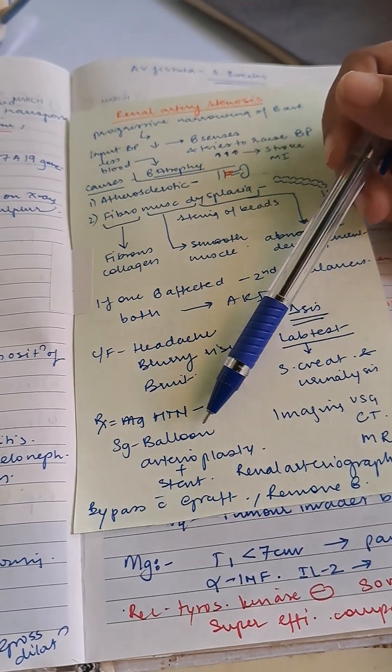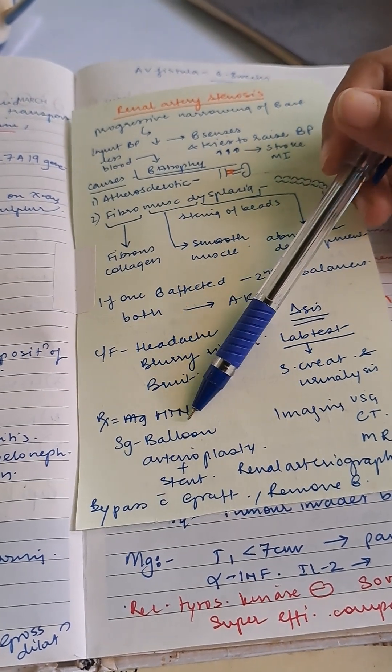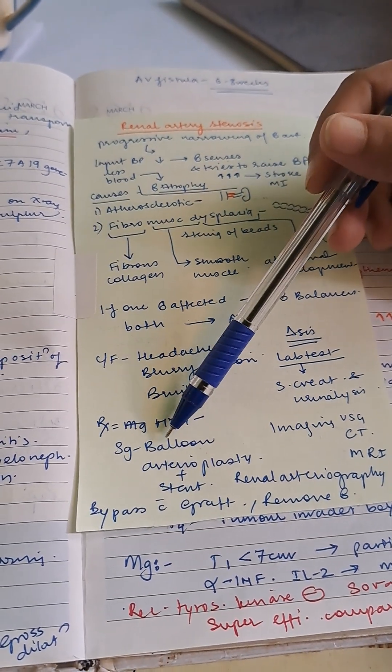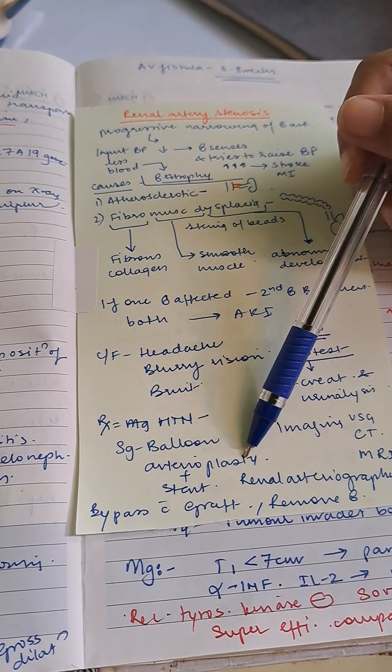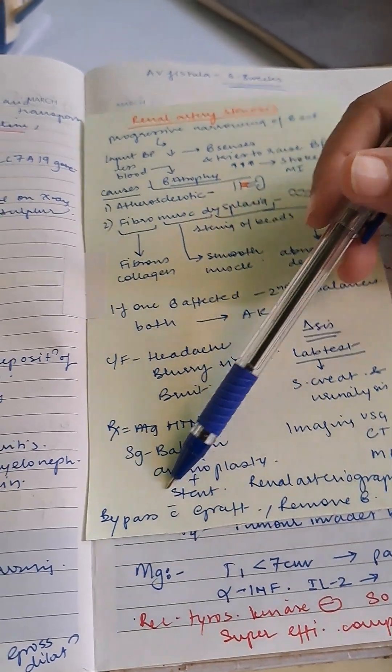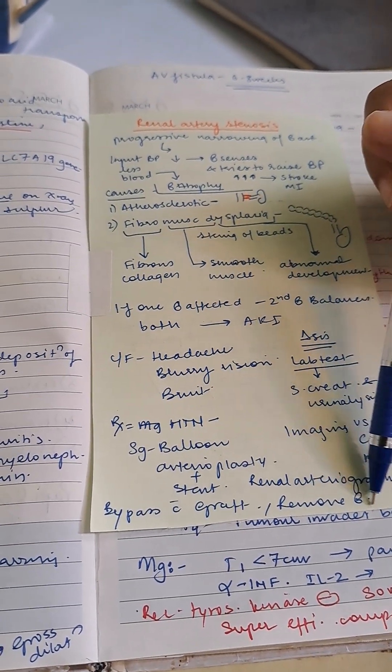Treatment of renal artery stenosis involves managing hypertension and surgery. Surgical options include balloon angioplasty with stent, bypass with graft, or nephrectomy to remove the kidney.